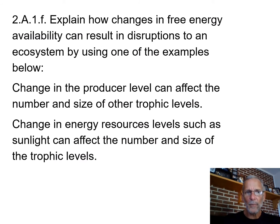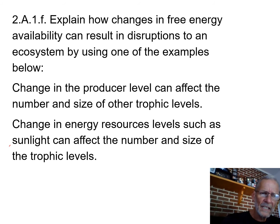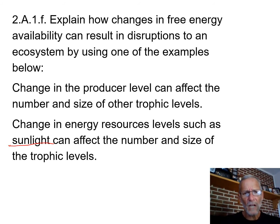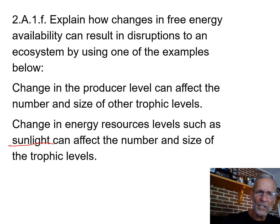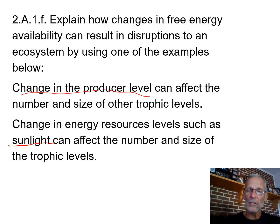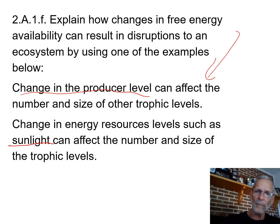Explain how changes in free energy availability can result in disruptions to an ecosystem. For example, if the sun goes out, effects cascade through the ecosystem. A change at the producer level triggers bottom-up regulation — the dominoes start to fall.